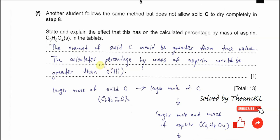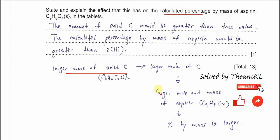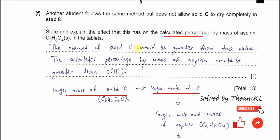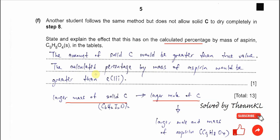Last part. Another student follows the same method but does not allow solid C to dry completely in step 8. There will still be some water there, it's heavier. State and explain the effect that this has on the calculated percentage by mass of aspirin. This is very easy. If the solid C is not dry completely, the mass of solid C is larger, and therefore the mole of solid C is larger. There will be larger mole and mass of aspirin calculated later, and the percentage by mass is eventually larger. The amount of solid C will be greater than the true value. The calculated percentage by mass of aspirin also will be greater than the previous calculation.